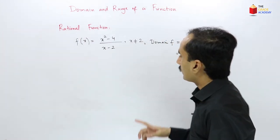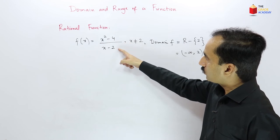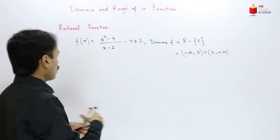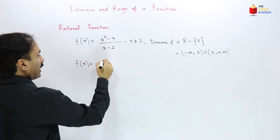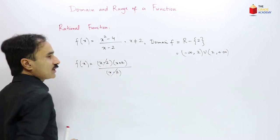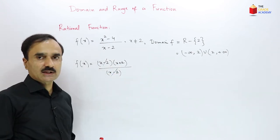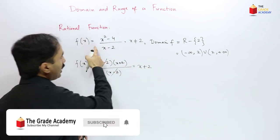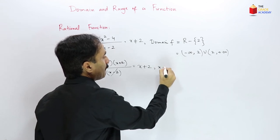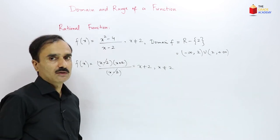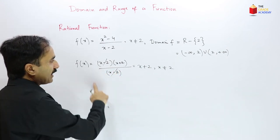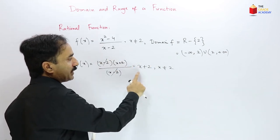To find the range, we factorize the numerator: x² − 4 = (x−2)(x+2). So f(x) = (x−2)(x+2)/(x−2). The (x−2) terms cancel, giving f(x) = x + 2. However, since x = 2 is not allowed in the original function, it is still excluded here.